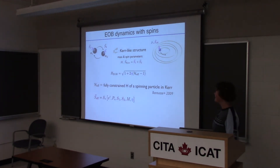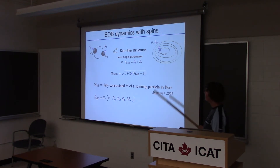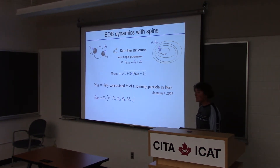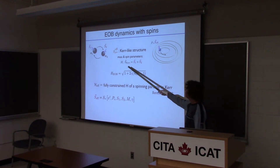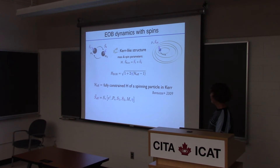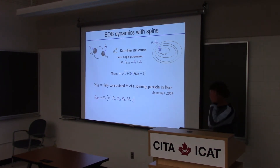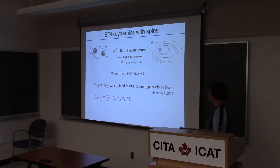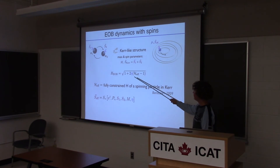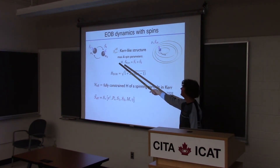How do we include spins? It's a similar idea. Instead of taking a Schwarzschild-like metric describing the non-rotating black hole, we take a Kerr metric to include the black hole spin. We take the metric parameters — instead of the Kerr mass and Kerr spin — to be the total mass of the binary and the total spin of the binary. The identification from action variables still holds, and for the effective Hamiltonian you have to compute that for a spinning particle in Kerr. Then you post-Newtonian expand this expression and compare to the post-Newtonian Hamiltonian for the spins.